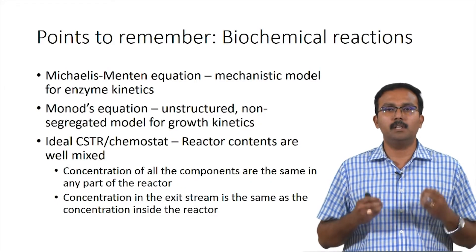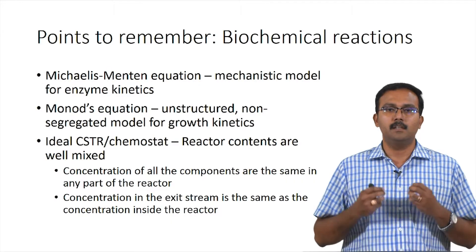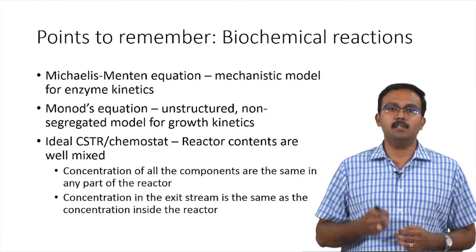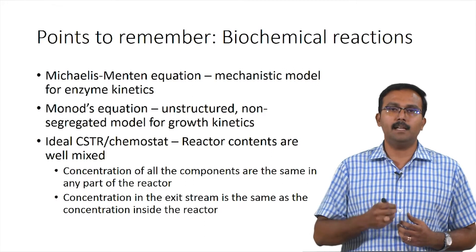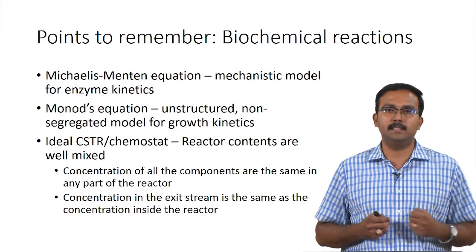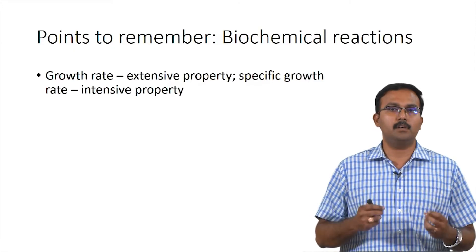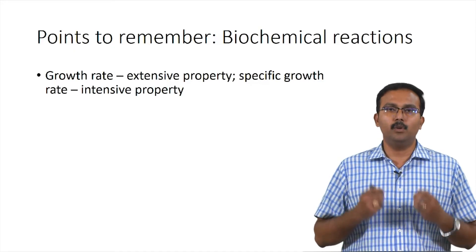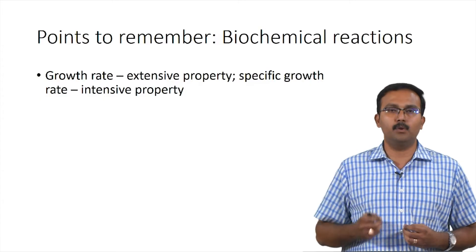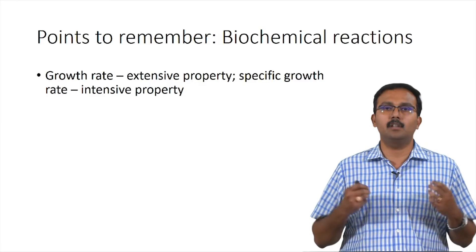We discussed an ideal CSTR or chemostat in the context of biochemical reactions. These are reactors where the contents are well mixed, meaning the concentration of all components is the same at any point in the reactor, and the concentration in the exit stream equals the concentration inside the reactor. Growth rate is an extensive property, and specific growth rate is an intensive property obtained by dividing the growth rate by the biomass concentration or biomass number.